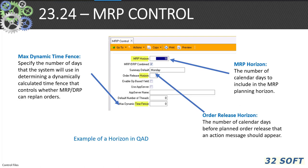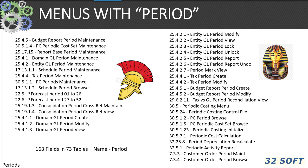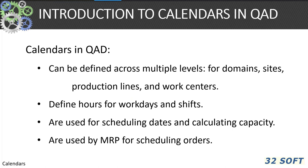A period is defined as an amount of time, such as a 30-year period. Periods are used in QAD — there are, by my count, 38 menu items which allow the manipulation and definition of periods in QAD. Calendars in QAD can be defined across multiple levels: domains, sites, production lines, and work centers. We define hours for work days and shifts, and these are used for scheduling data for calculating capacity, MRP, and schedules.